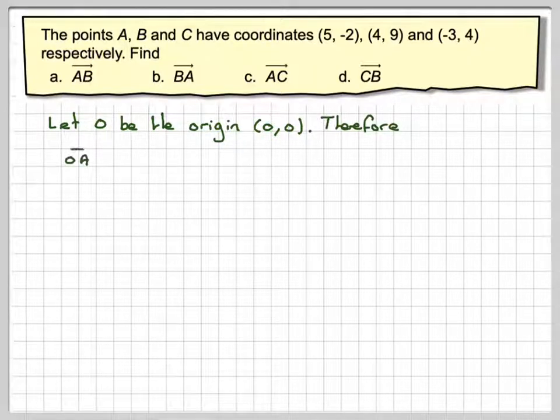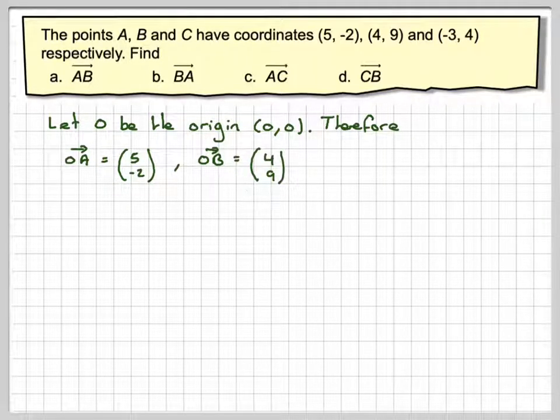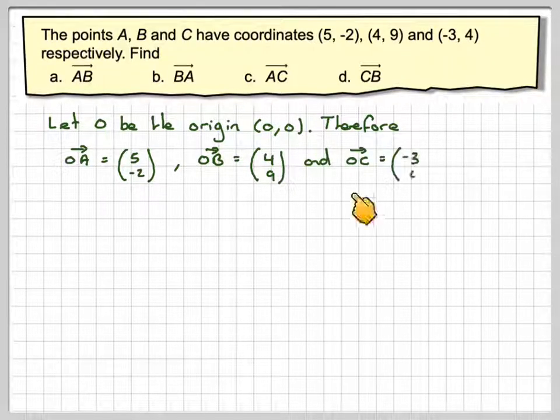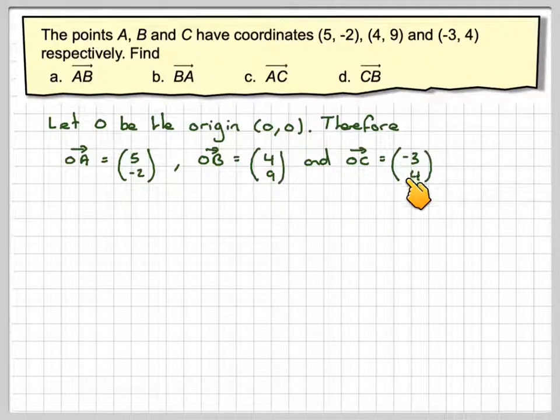And therefore, vector OA will be writing these as a vector (5, -2). So that's a vector from the origin to a particular point A. Vector OB will be the point (4, 9). And the vector OC from the origin to C will be (-3, 4).